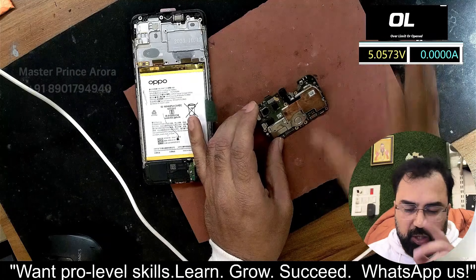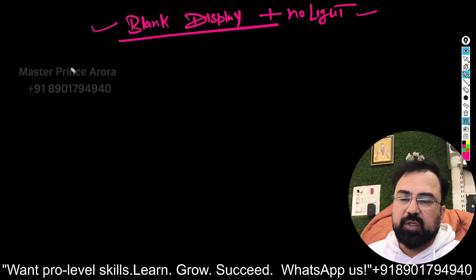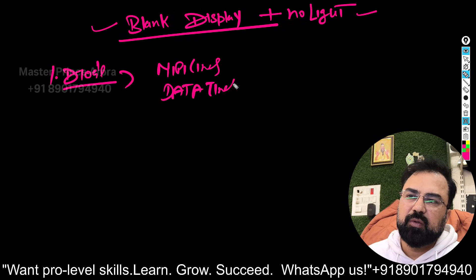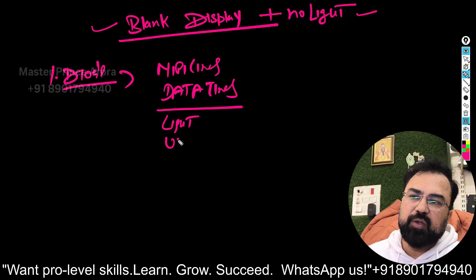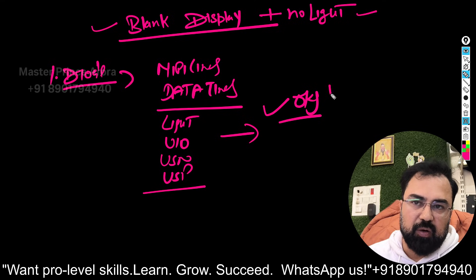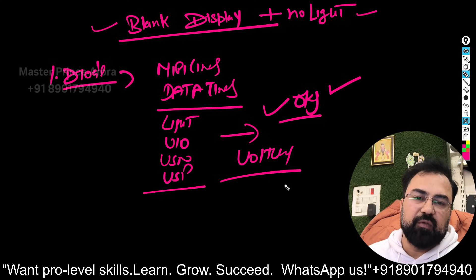Now I'll show you where the fault is. This phone came to me with a blank display and no light issue. In the first step of diagnosis, we measured the diode values on the MIPI lines, data lines, light section — VSP, VSN — all diode values were 100% okay, no fault. Everything looked good. After this we measured the voltages step by step — every voltage also looked good, everything fine.